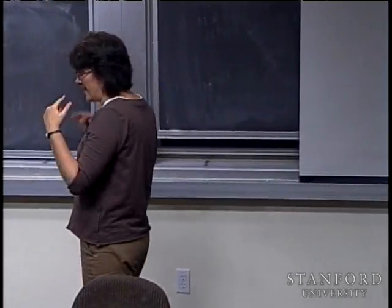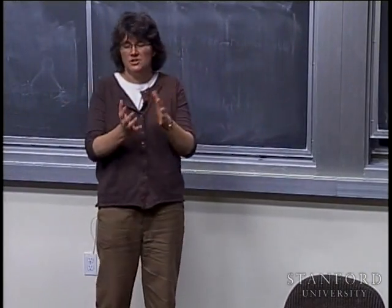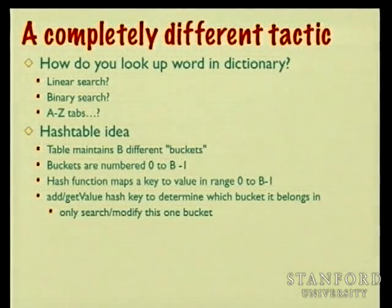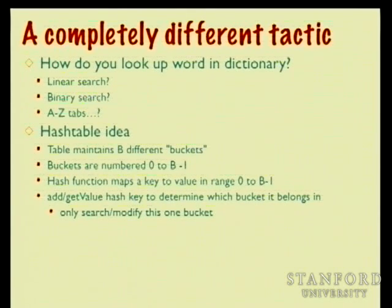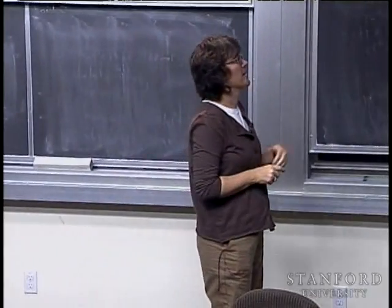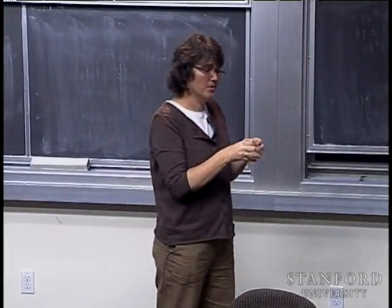Here's a theoretical concept: you have a big dictionary and you want to look up 'xylophone.' You certainly don't do linear search — you're not going to page through 2,000 pages from the A's. You don't even do binary search. You tend to know about where X is. Dictionaries often have tabs along the pages showing where certain letter ranges start, letting you jump straight to the right region and do a simple search from there.